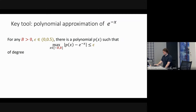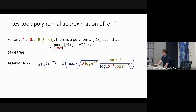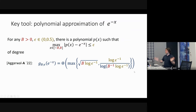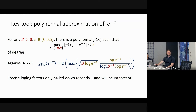We use a polynomial approximation of degree equal to the maximum of two quantities: sqrt(B · log(1/epsilon)) and log(1/epsilon) / log log(1/epsilon), roughly. It turns out the precise log-log factors in the second term were only nailed down in this recent joint work, and these log-log factors end up being very important for the algorithm.